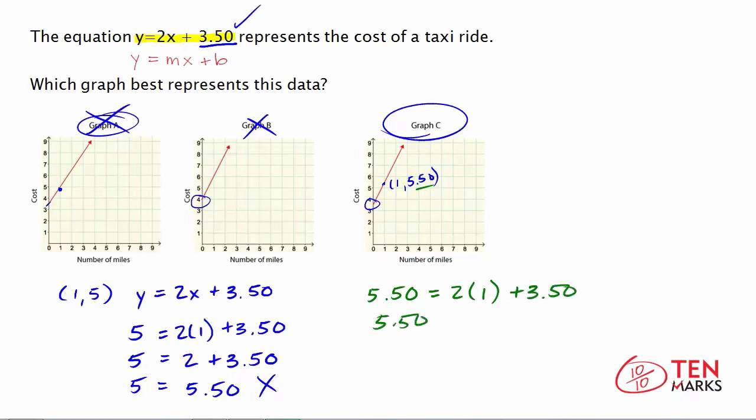5.50, 2 times 1 is 2 plus 3.5. Now take the sum of the right side, and you get 5.5. This does hold true. This line does match the equation shown, so graph C best represents the data about the taxi ride. In this lesson, you've practiced working with trend lines. Thanks for watching.